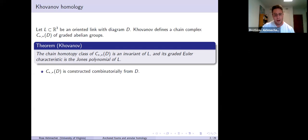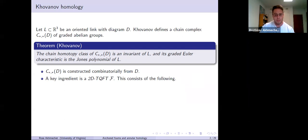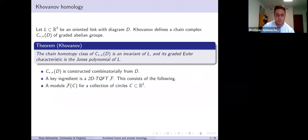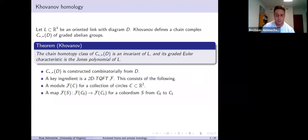I want to highlight one aspect of the complex. First off, it's built combinatorially from the link diagram. The ingredient in defining the chain complex is a so-called two-dimensional TQFT, here I'll denote it by F. F is a rule — an assignment — and it gives you a module F of C for a collection of circles C in the plane. And it gives you a map between these modules for cobordisms between circles, so it turns the topological information into something algebraic.